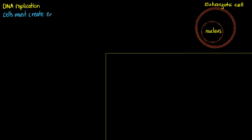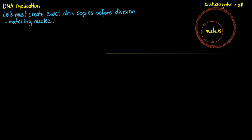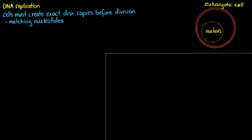For our cells to be able to divide, they first need to create exact copies of their DNA, meaning the replicated chromosomes must be identical. This is because our DNA contains our genes and instructions for daughter cells to carry out their tasks — without the DNA, the new cell would not know what to do. The chromosomes must be identical in the code of their bases, our nucleotides. We have four bases in DNA, so let's take a quick look at each one and how they interact.